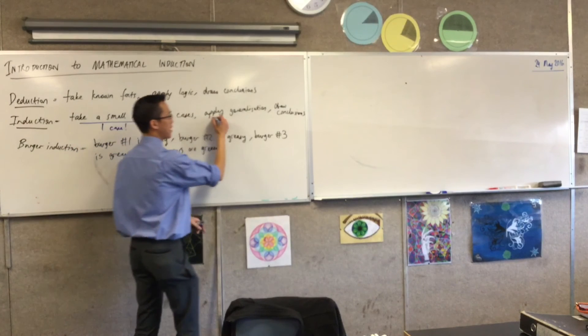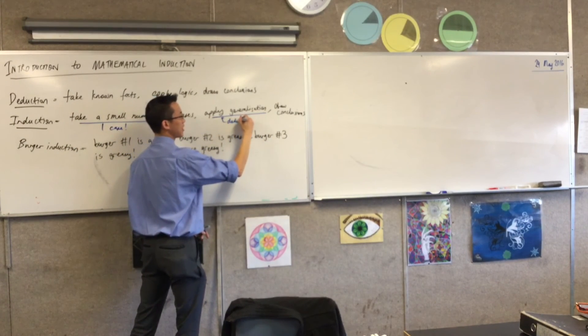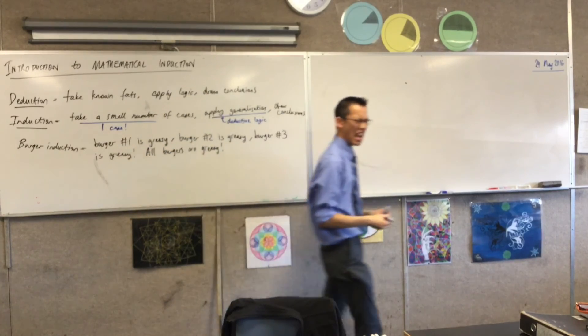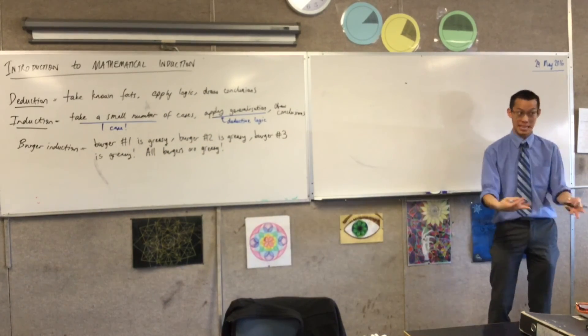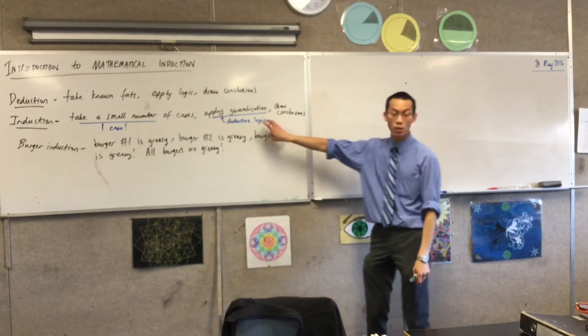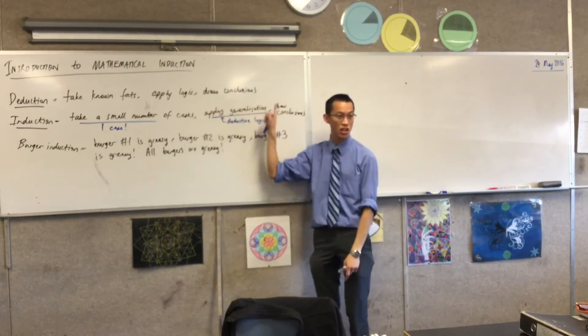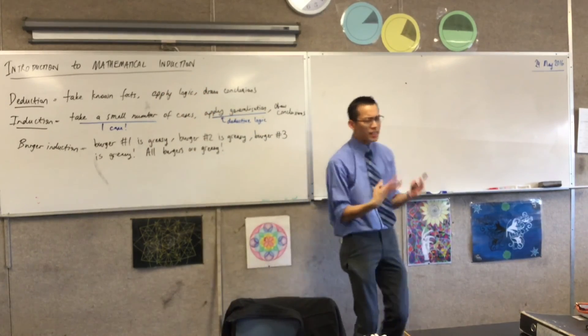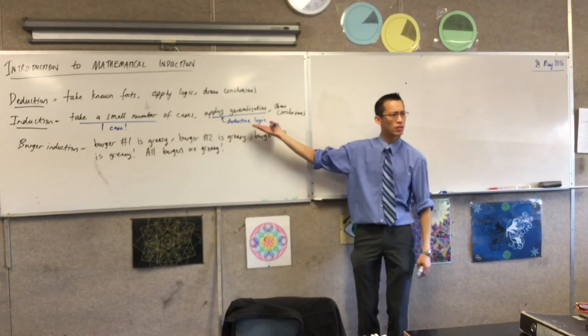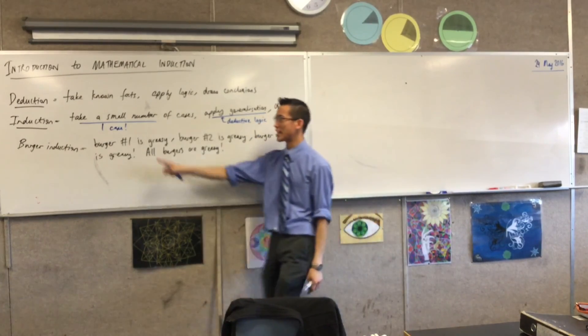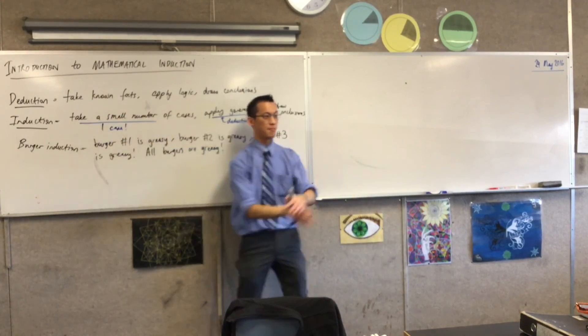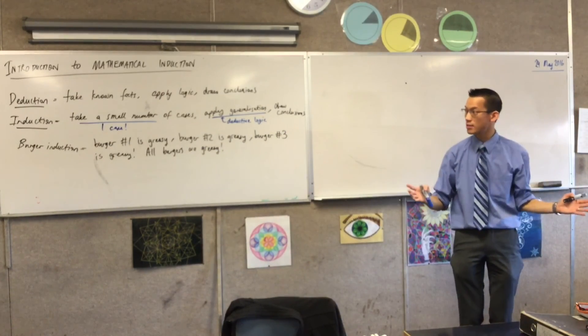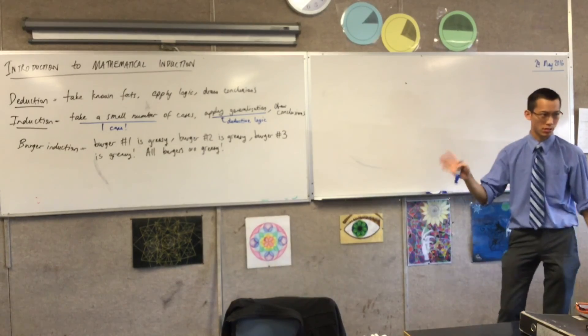And then, instead of just applying a generalization like, yeah, I think they're all going to be like this, what it does—this is what's clever about it—is it makes deductive logic into the generalization. So it's not just like, yeah, I think this should always happen because it's happened a lot. There's actually a lot of logic that goes into producing the generalization. So what you get out of this, mathematical induction—the guts of it are actually still deductive logic. But the whole principle of taking just one little thing and then proving it as the case generally for an infinite number of cases, that's the way mathematical induction works.